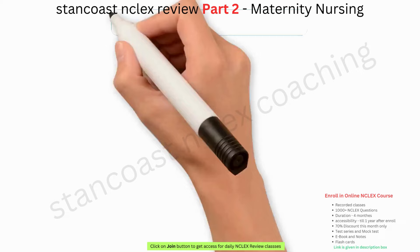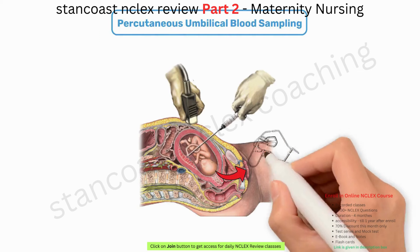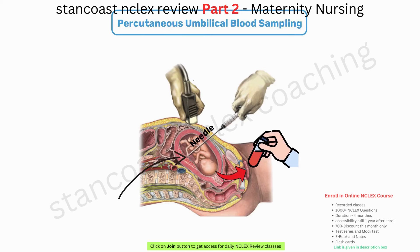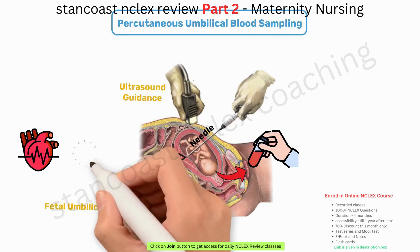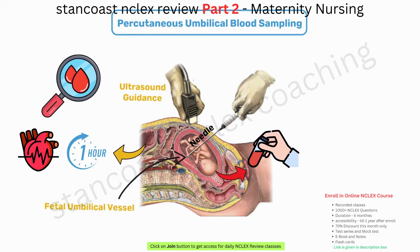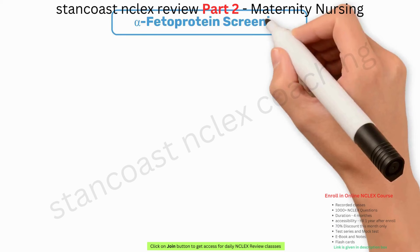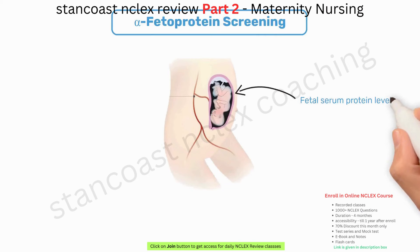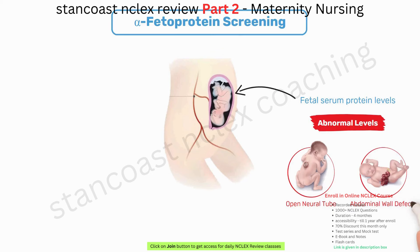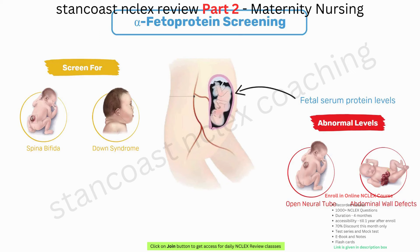Percutaneous Umbilical Blood Sampling (PUBS) is carried out when fetal blood sampling becomes necessary, involving the insertion of a needle into the fetal umbilical vessel under ultrasound guidance. Fetal heart rate monitoring is required for one hour post-procedure with a subsequent ultrasound to check for bleeding or hematoma formation. RH-negative women may receive Rho-D immune globulin. Alpha-fetoprotein screening involves the assessment of fetal serum protein levels; abnormal levels can indicate open neural tube and abdominal wall defects and help screen for spina bifida and Down syndrome. In the event of abnormal levels, repeat testing is advised as false positives can occur.